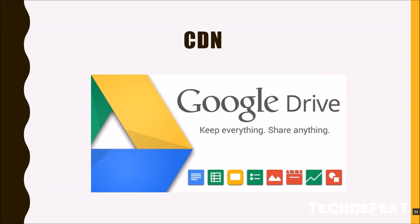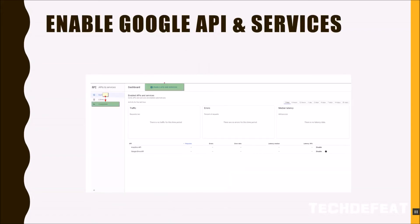Now let me show you in detail how to enable the Google API. You need certain credentials to upload files or get a list of files from Google Drive — similar to a username and password, but using API keys. First, you have to enable those things for Google Drive and then create credentials.